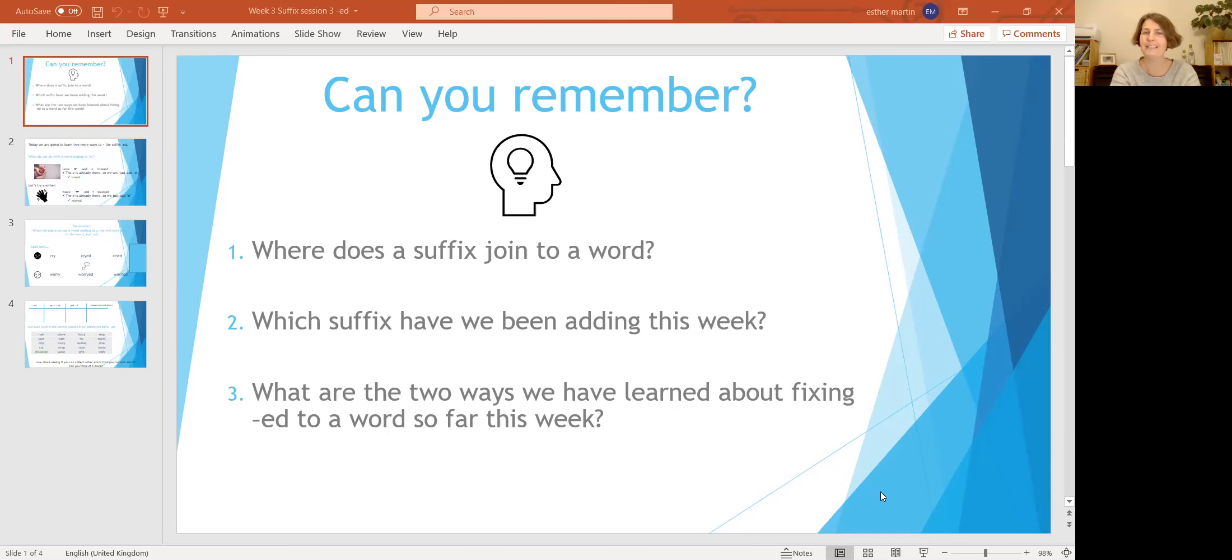And what are the two ways we've learned about adding the suffix -ed so far? Well, the first way was just to fix it to the end. We don't need to do anything, we're just going to fix it to the end of the word. The second way was a little bit more tricky. We needed to know our vowels, didn't we? Can you remember your vowels? Show me your fingers: a, e, i, o, u. Do you remember the rhyme that we had? An elephant in olive underpants, that's right.